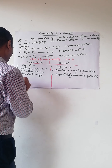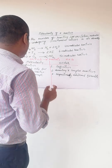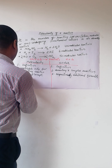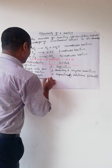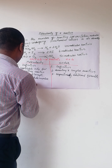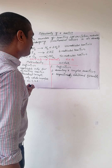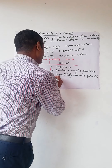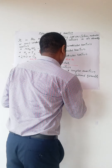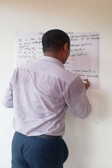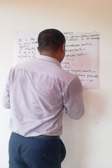The fourth difference: molecularity has only whole number values — that is 1, 2, 3, etc. — it cannot be a non-integer. But order can be zero, whole numbers such as 1, 2, 3, etc., or even a fractional value.